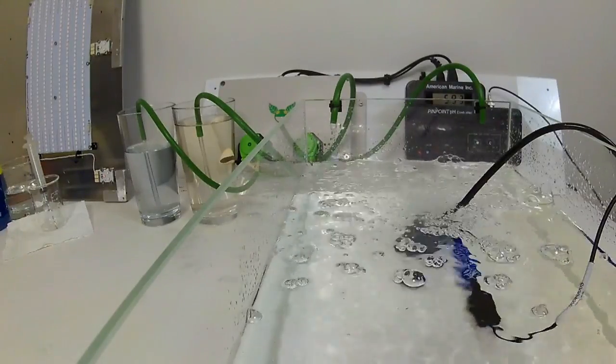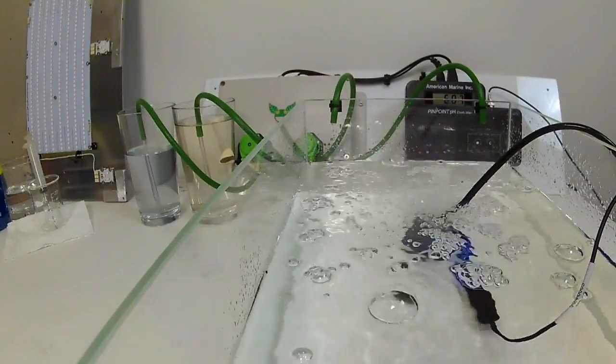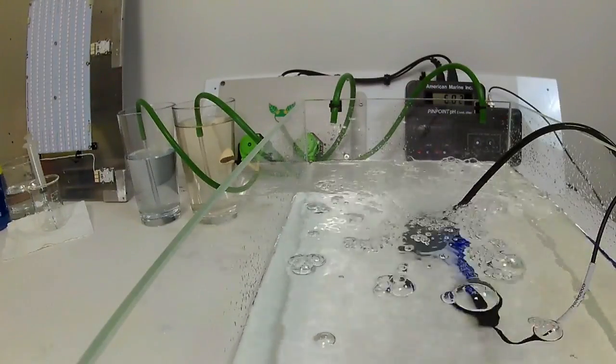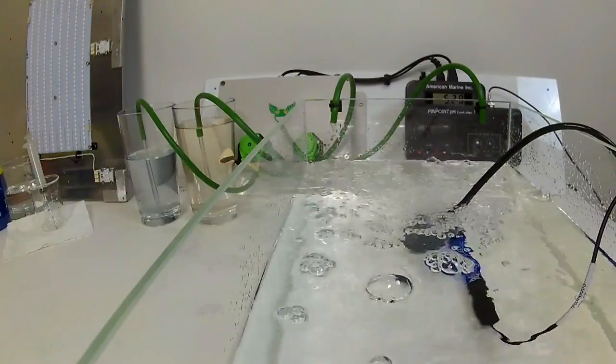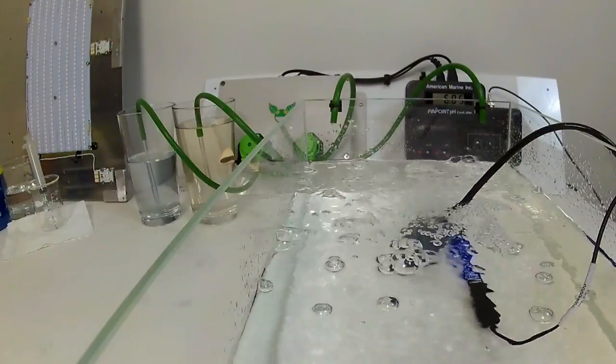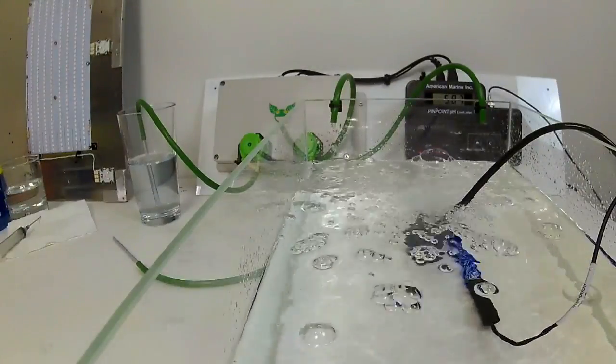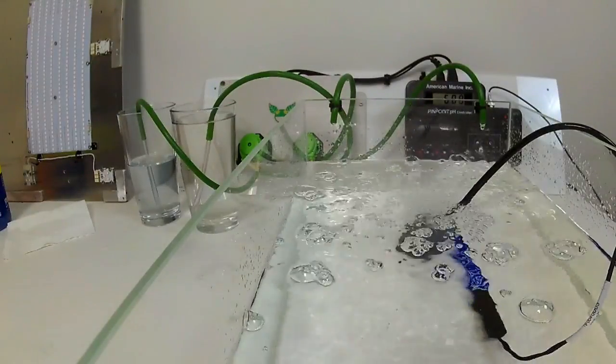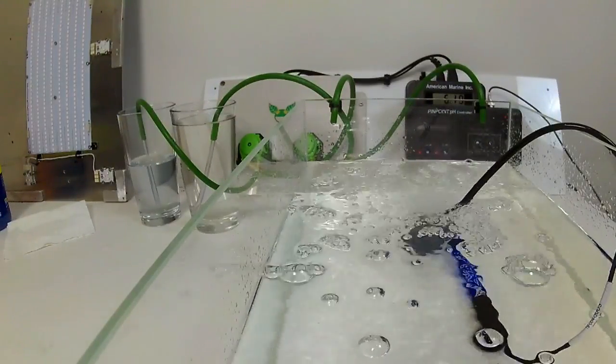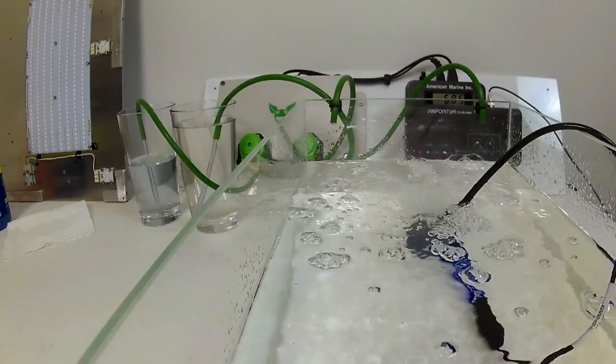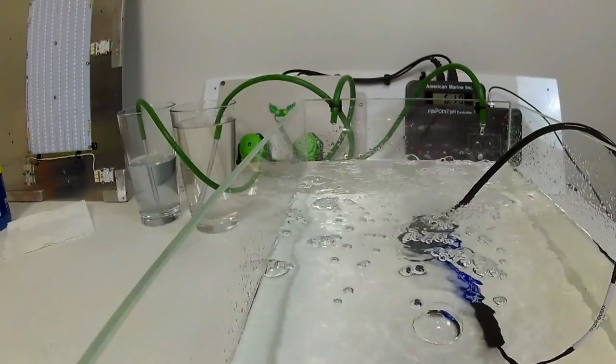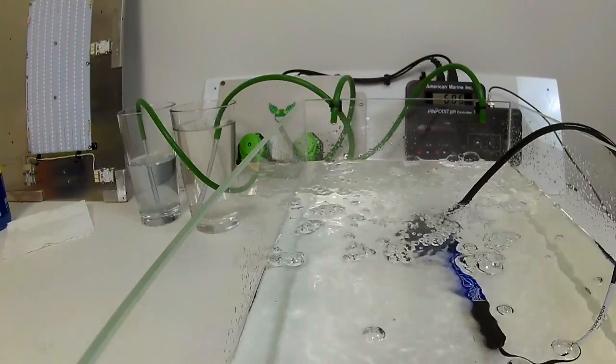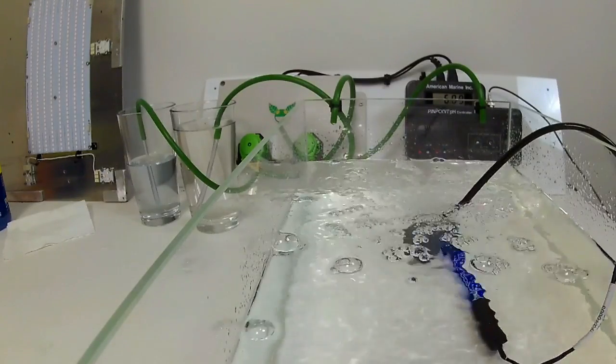The other thing I determined was that having the pH probe on the other side actually isn't quite as good. You probably want to have your pH probe closer to where the pH up and down solutions are coming out because that way the probe registers the change a little faster and will kill the power to the peristaltic pump faster. This worked really well for me. I've been running it now for a couple hours as I'm editing this video and once it got stable it's stable at 6.1. The peristaltic pumps haven't turned on in about an hour.